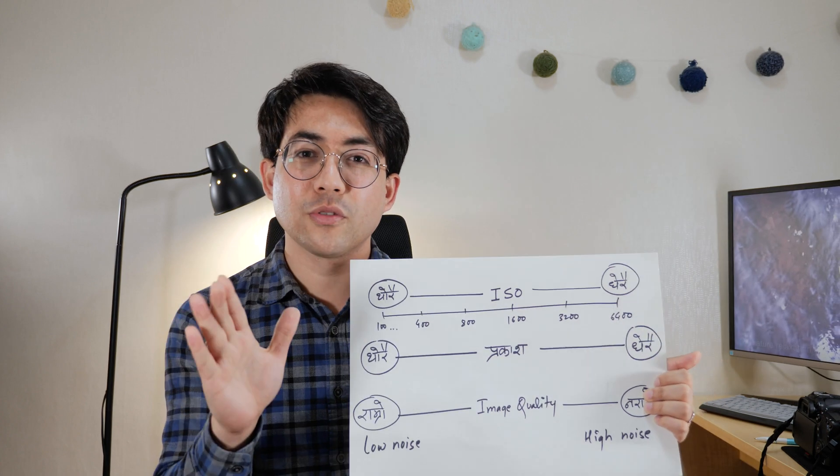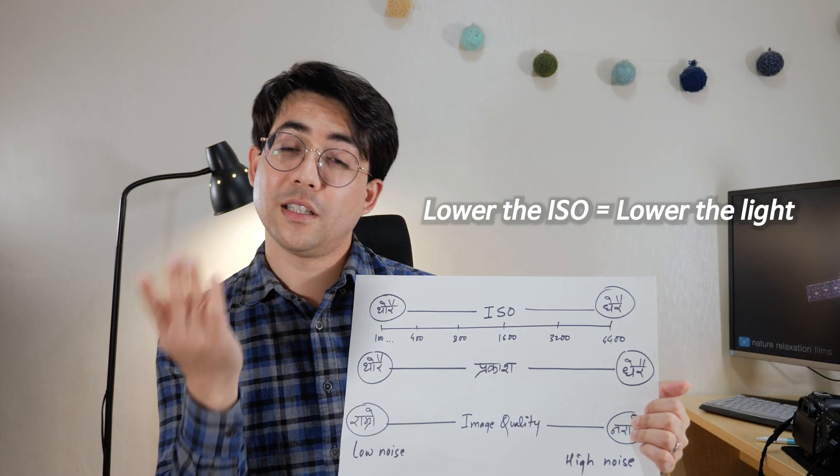That brings us to ISO. ISO relates to the camera sensor. If your aperture is wide open it lets in light, but ISO also controls the sensor's sensitivity. If the sensor is very sensitive — higher ISO — it amplifies the light. ISO values go: 100, 300, 400, 800, 1600, and higher.